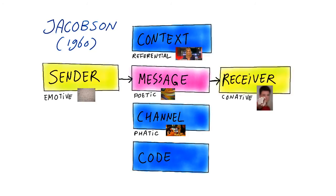And finally, there's the metalingual function, where we use communication to explain the codes that we use. For instance, a dictionary. Another example is the explanation I'm giving right now, in which we are discussing concepts from the field of semiotics.